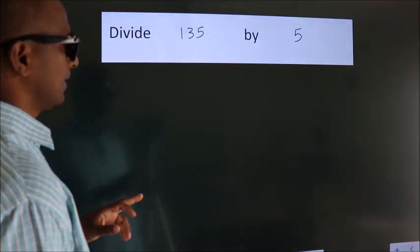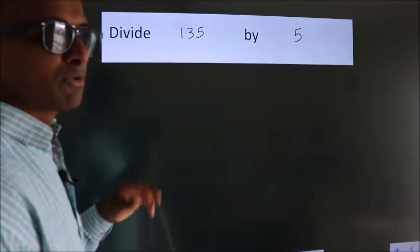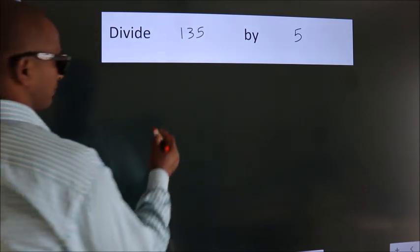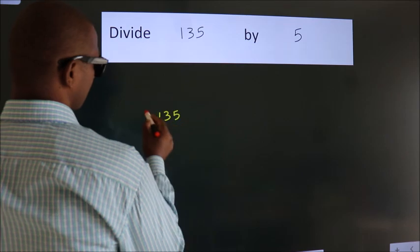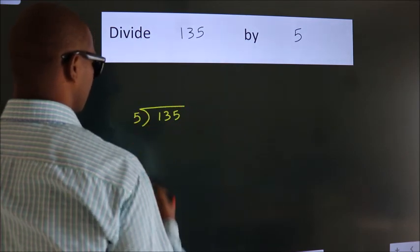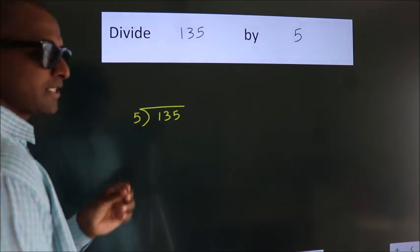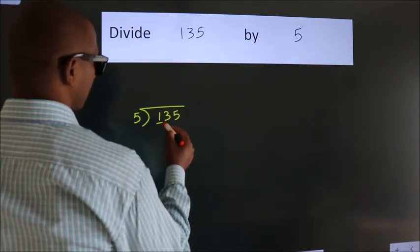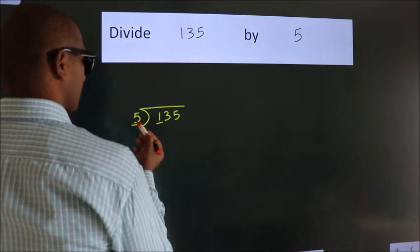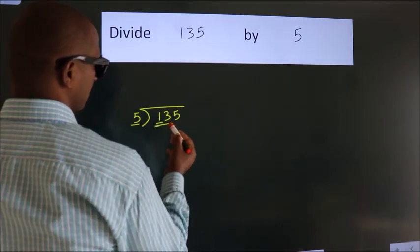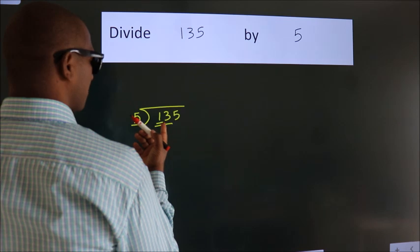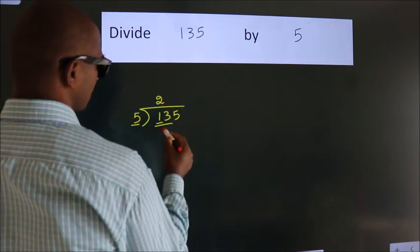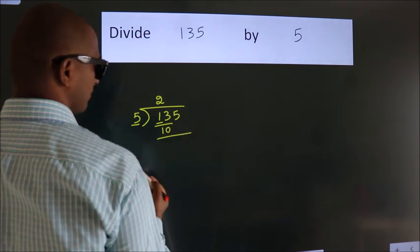Divide 135 by 5. To do this division, we frame it with 135 here and 5 here — this is step one. Here we have 1, which is smaller than 5, so we take two numbers: 13. A number close to 13 in the five times table is 10, since five twos are ten.